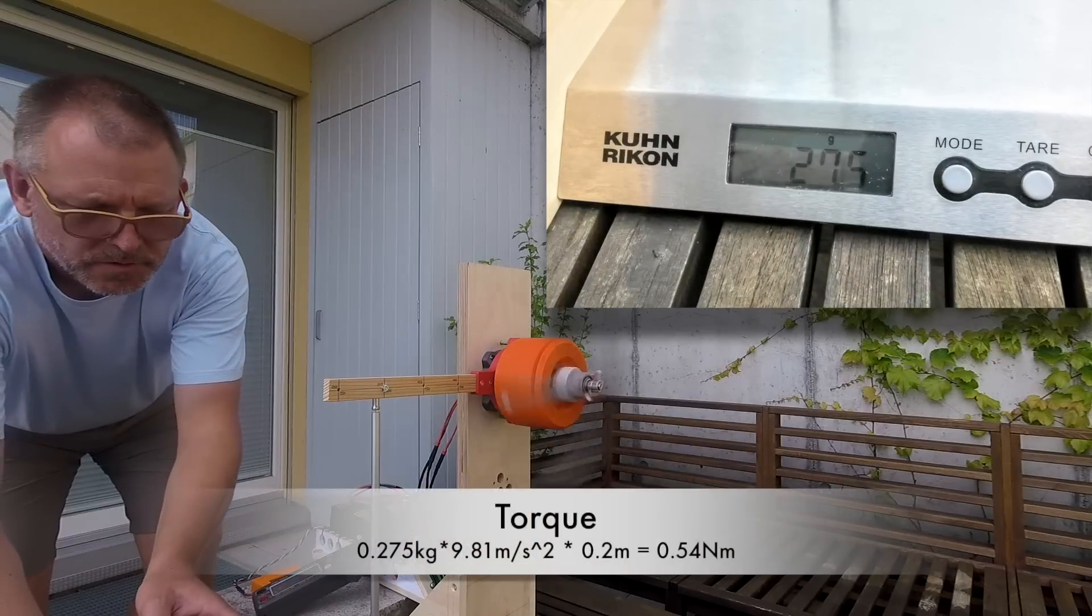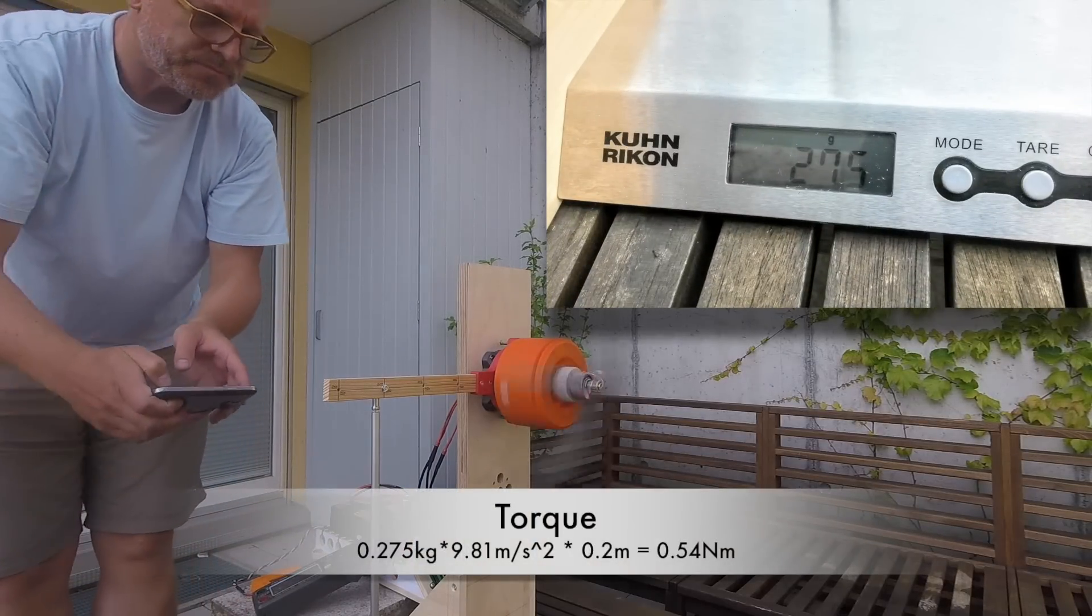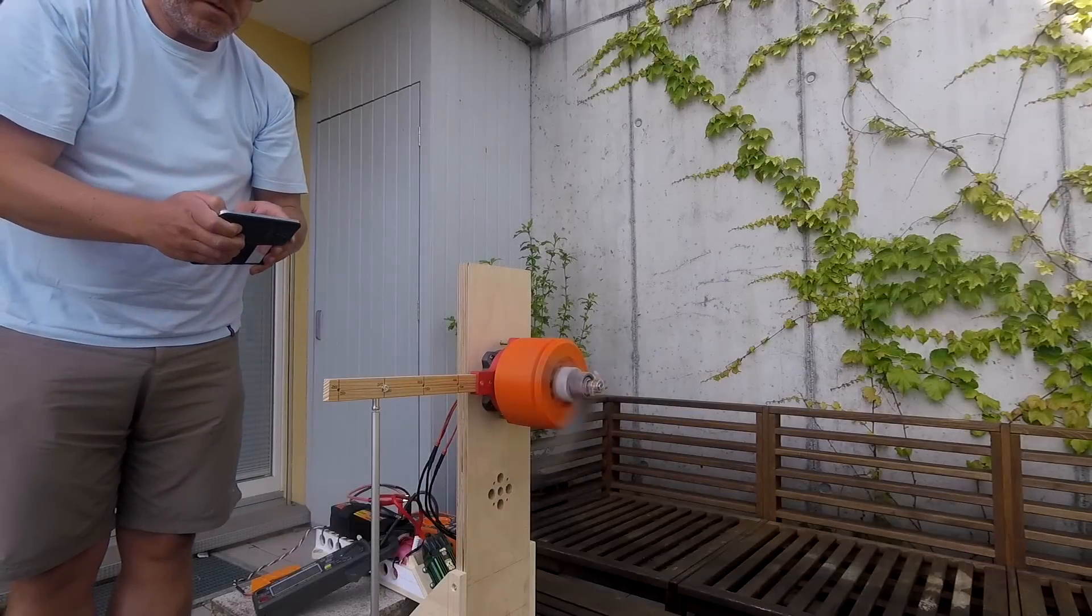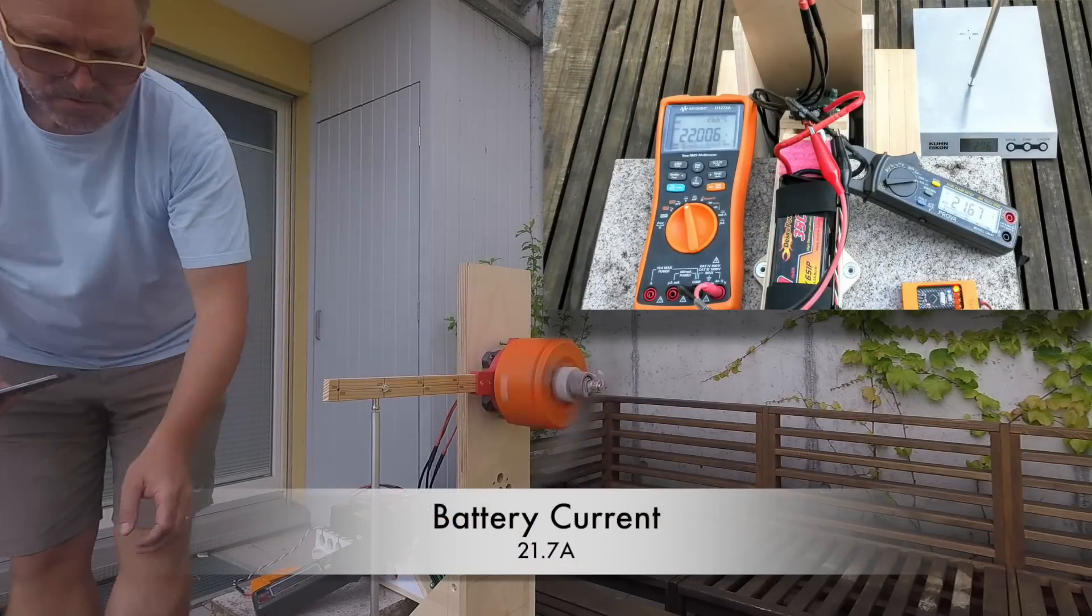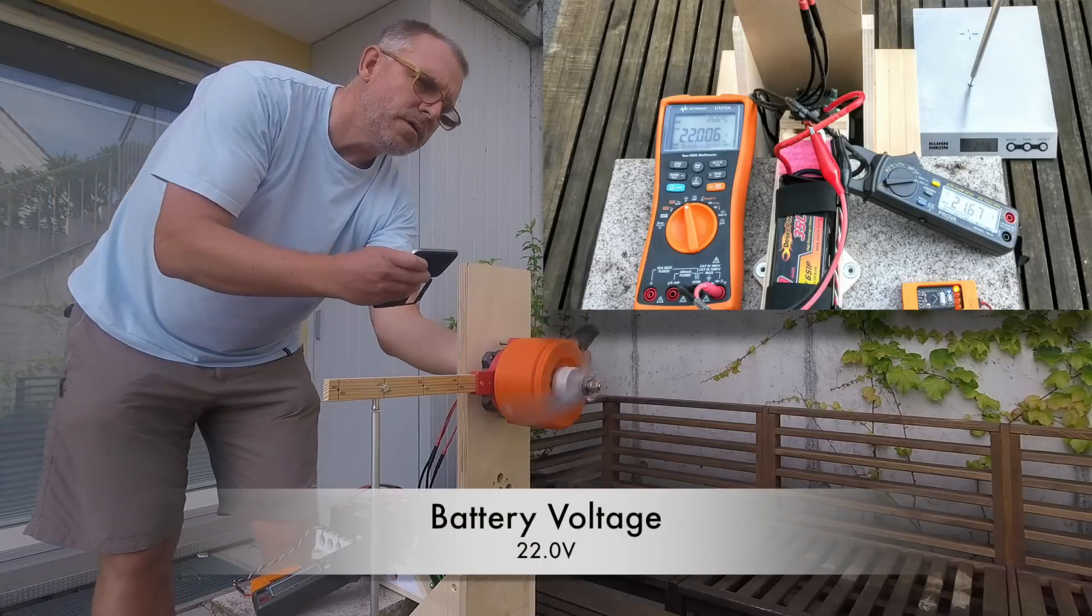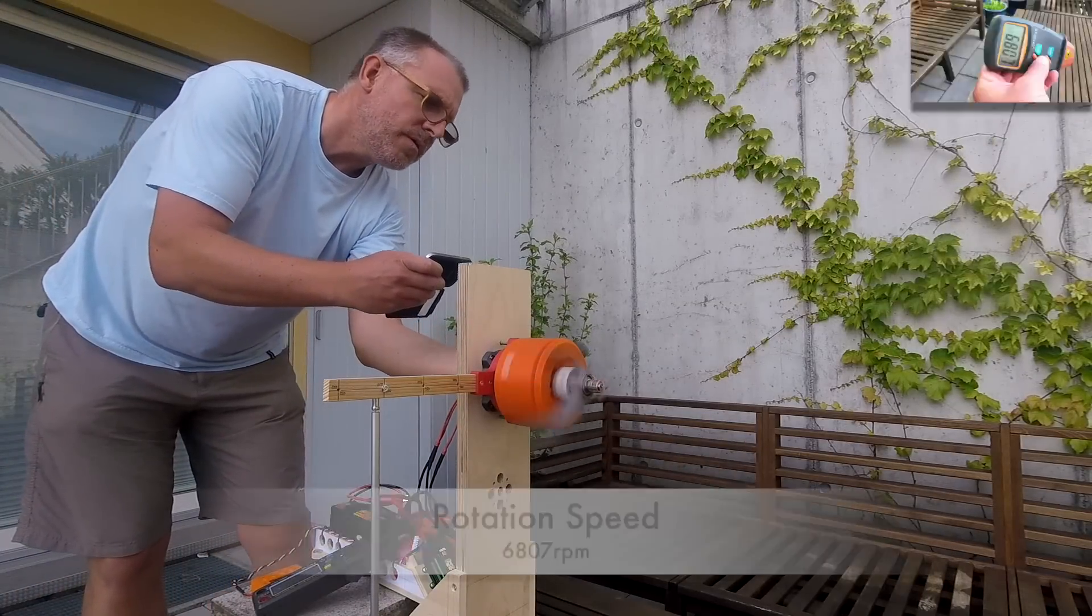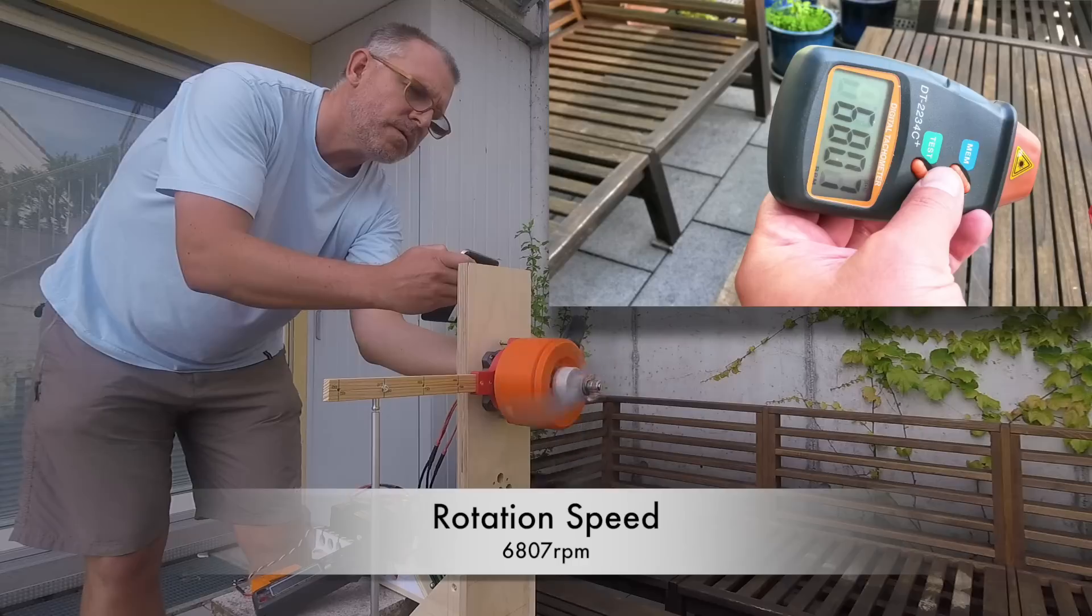Torque is the product of force and lever and with the current setup it is a bit more than half a newton meter. Running at full power also the voltage and the current at the side of the battery is measured. 6 lipo cells in series provide 22 amps and 22 volts. Finally I am measuring the rotation speed. It is about 6800 rpm.